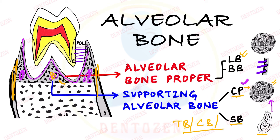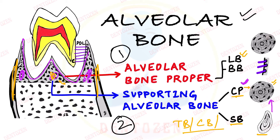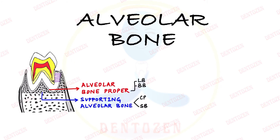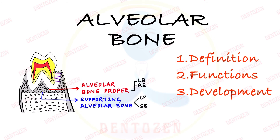To summarize, alveolar bone has two parts: first is alveolar bone proper, which has two subtypes — lamellated bone and bundle bone. Supporting alveolar bone further has two types: outer and inner cortical plates and central spongy bone. Now let's see how to write for your exam, covering definition, functions, development, and structure in detail.